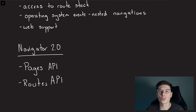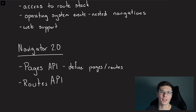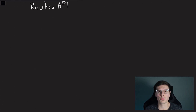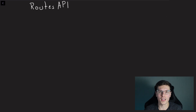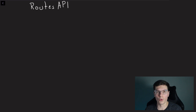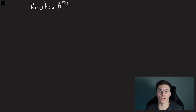Navigator 2.0 fixing those four problems shows it's a necessary change. However, the execution wasn't the best. Navigator 2.0 comes with two different APIs: the Pages API and the Router API. The Pages API is fine — it basically defines your routes and pages, a little verbose but easy enough to understand. My main issue is with the Router API. The first red flag was that it supports both page-based routes from Navigator 2.0 and pageless routes from Navigator 1.0.